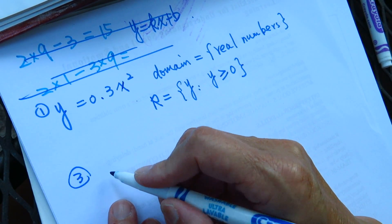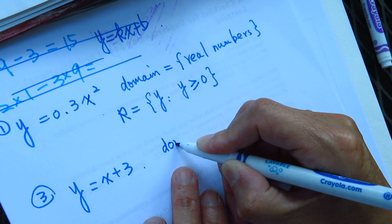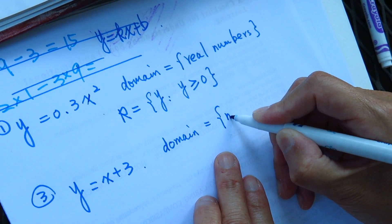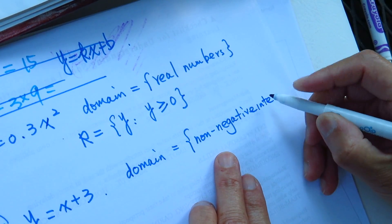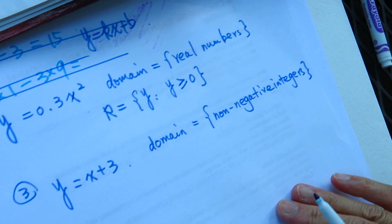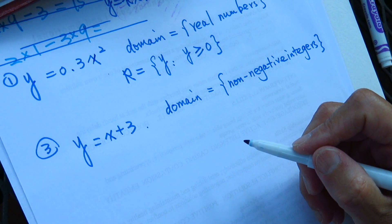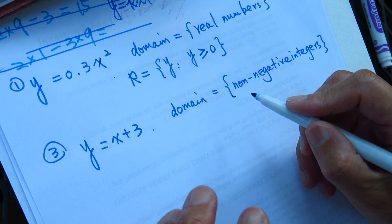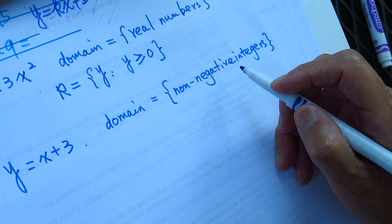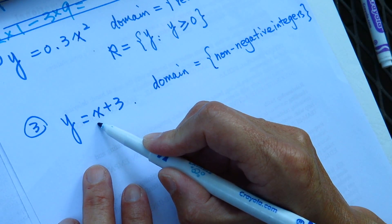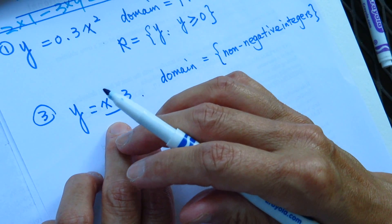Number 3. y equals x plus 3. Now the condition they give us, domain is non-negative integers. So, if it is non-negative integers, the least of such number, integer, is 0, 1, 2, 3, 4. It's a complete number. No fraction, no decimal point. It's a whole number, right? So non-negative integers, the smallest is 0. So the range will be from 0. The domain is from 0 to whichever number, integer, Googleplex.